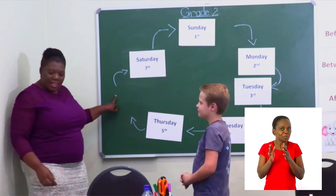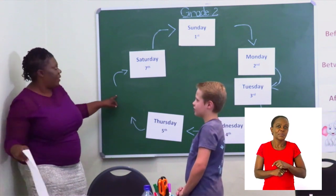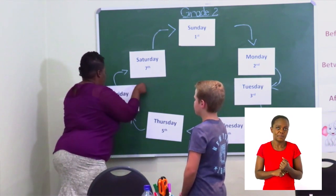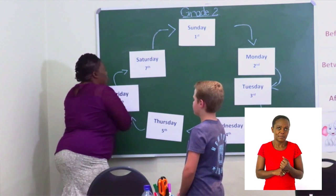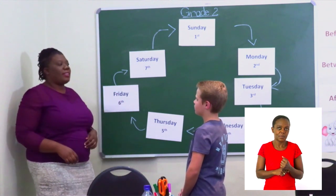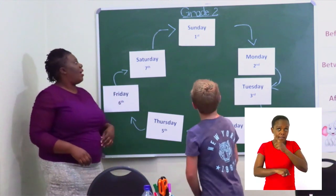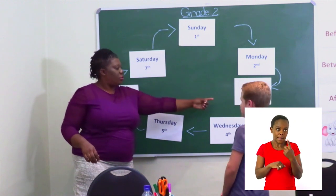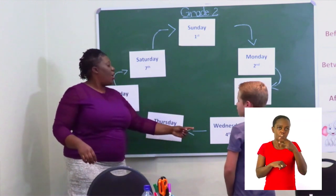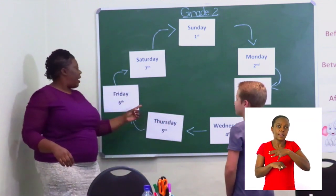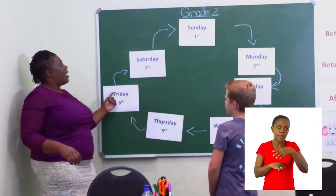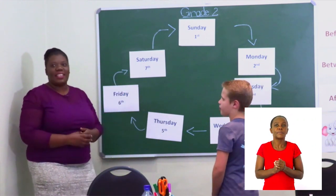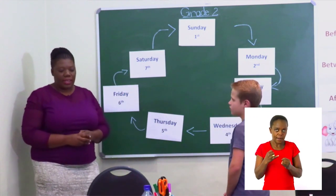The next day is Friday. So the days of the week that we have are: Sunday, Monday, Tuesday, Wednesday, Thursday, Friday, Saturday. Saturday is the last day of the week.